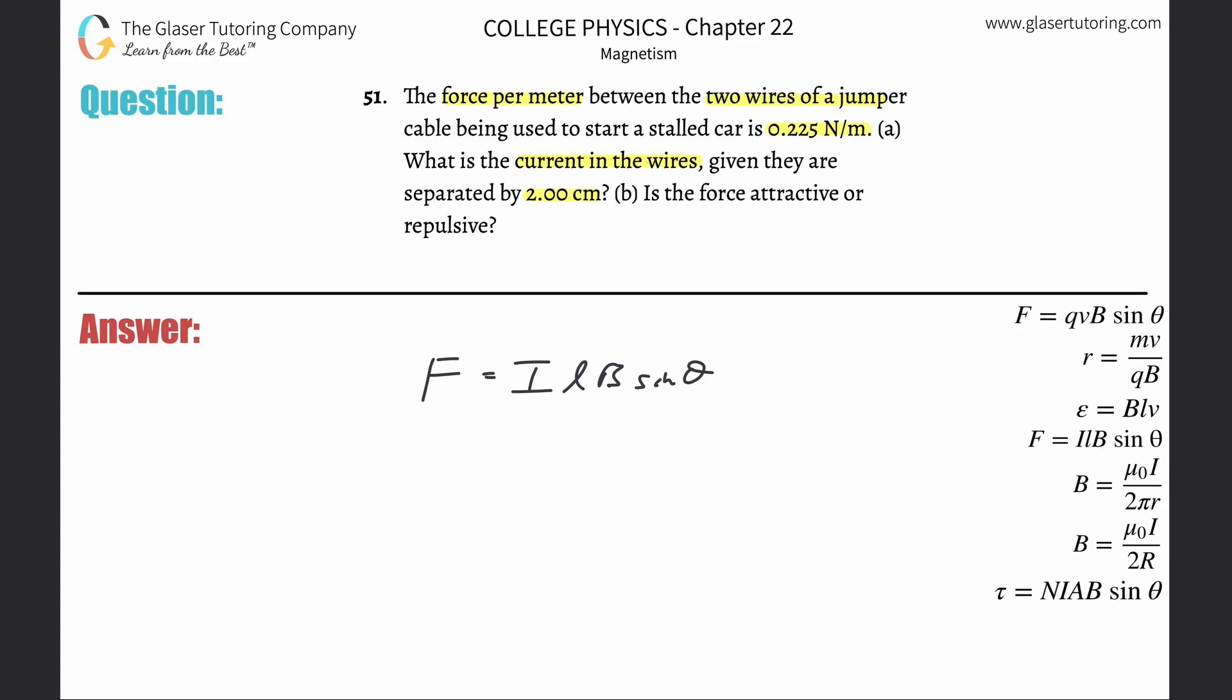First of all, it gives us a force per meter. So if you notice here in the formula, the only value that has meter in it is going to be the length. So basically, divide out the length from both sides and you realize now what they gave us is this piece. So that is known. That's going to be the 0.225. Now, the only thing they gave us now is just the separation between them, and that doesn't come up here at all.